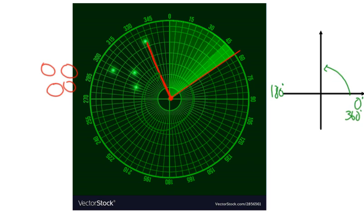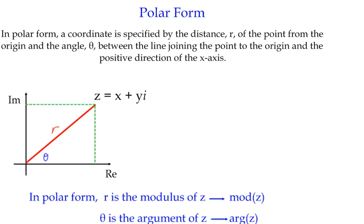So we can represent a complex number by a distance and an angle. And that's what we call polar form.